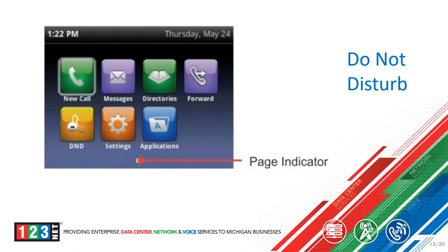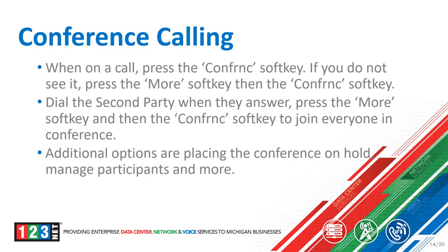This image shows what do not disturb looks like in the main menu of the phone. Here you can see the icon with DND below it — select that to activate it, and select it again to deactivate it.